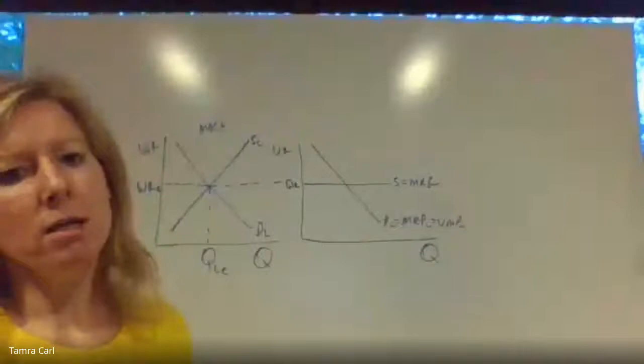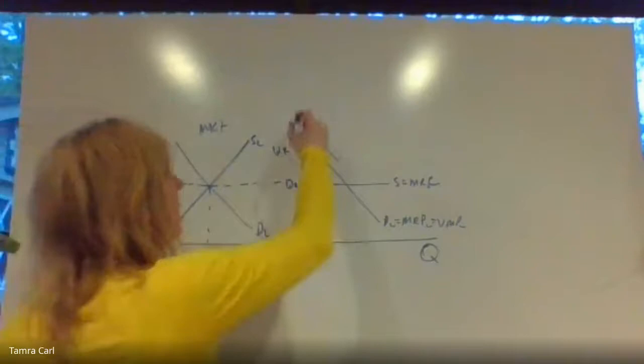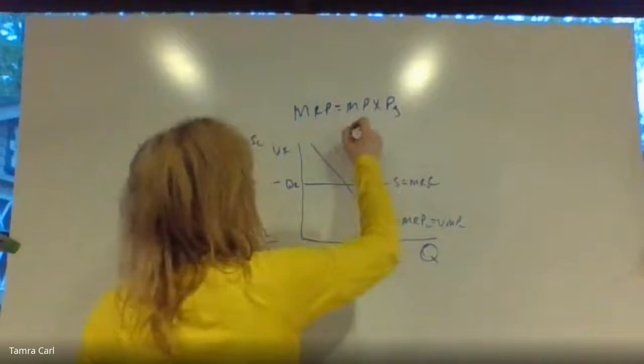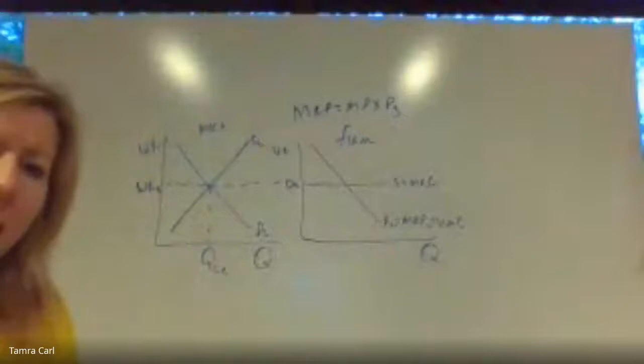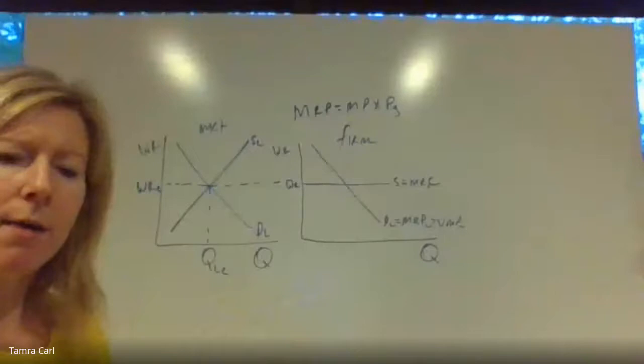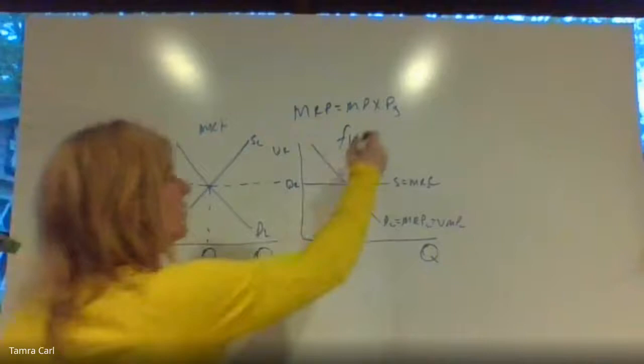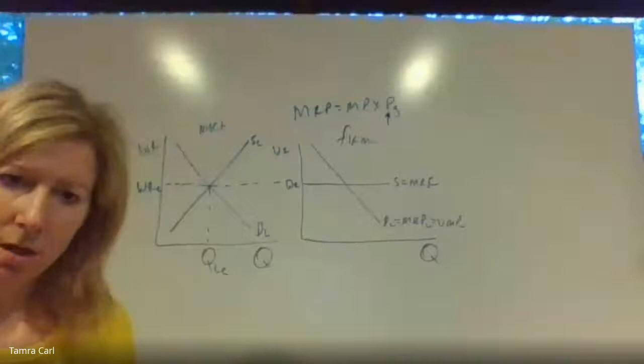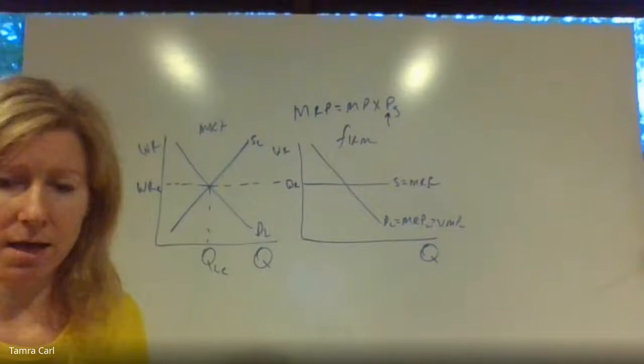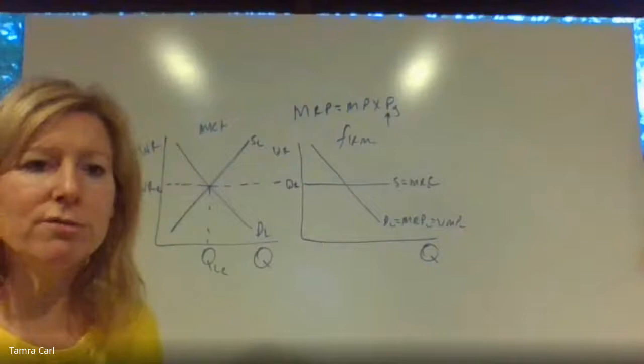A key thing to remember is the formula MRP equals marginal product times the price of the good — this is the firm. I can talk about the product market from Unit 1, where things change. If there's an increase in demand because of consumer preferences, there's an increase in the price of the good, which causes an increase in the demand for workers. It's a derived demand — the demand for a resource is derived from the product it produces. Two things affect the demand for a resource: productivity and product price.